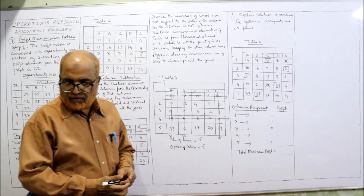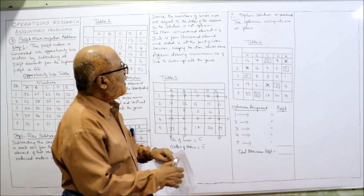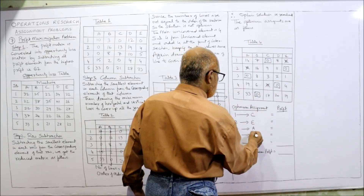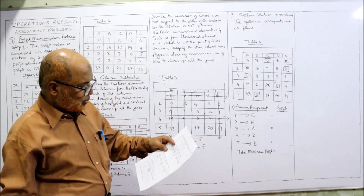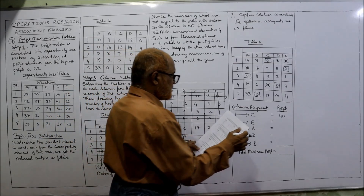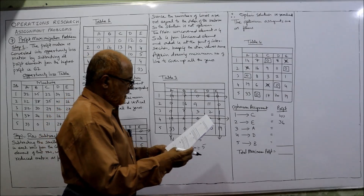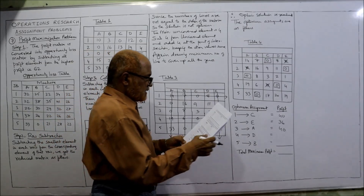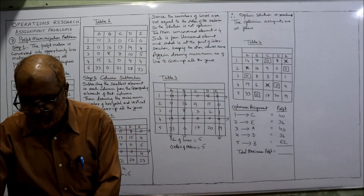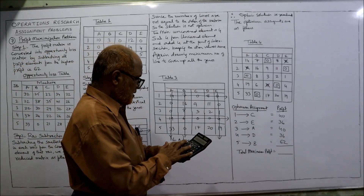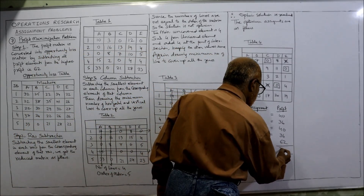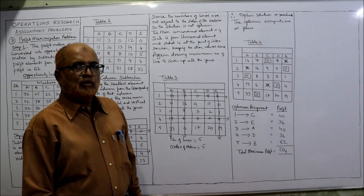Now refer back to the original profit matrix. The assignments are: job 1 to machine C (profit 40), job 2 to machine E (profit 36), job 3 to machine A (profit 40), job 4 to machine D (profit 36), job 5 to machine B (profit 62). Total maximum profit: 40 plus 36 plus 40 plus 36 plus 62 equals 214. So the maximum profit is 214.